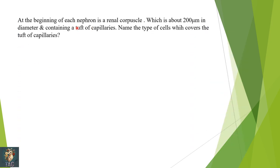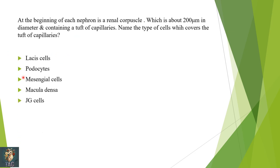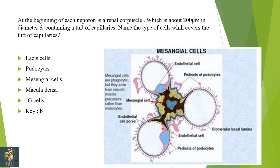Next: at the beginning of each nephron is the renal corpuscle, about 200 micrometers in diameter, containing tuft capillaries. Name the type of cells which cover the tuft capillaries — lysis cells, podocytes, mesangial cells, macula densa cells, or JG cells? In this diagram you can see the food processes of the podocytes and on the inside the endothelial cells, with filtration barrier present. The endothelial cells are covered by the foot processes of the podocytes. Correct option is podocytes.